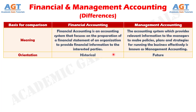Number two: Financial Accounting uses the monetary records of past financial activities, so it is historically oriented. As against, Management Accounting is future oriented, as it provides both present and future information in the form of forecasts and budgets which are duly analyzed and presented in a detailed manner so as to act as a base for management decision-making.